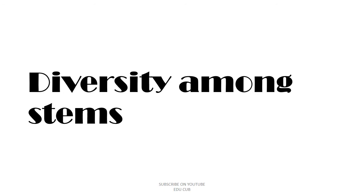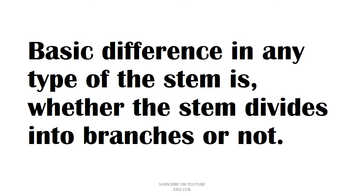Our next main subtopic is diversity among stems. Recall the nature of plant stems you have observed in your surroundings — you may have observed very strong stems, stems with thick bark, and stems with various colors. There are also plants that grow upward with the help of supporters, or run on the ground due to their weak stems. The basic difference in any type of stem is whether the stem divides into branches or not.